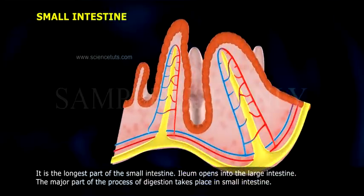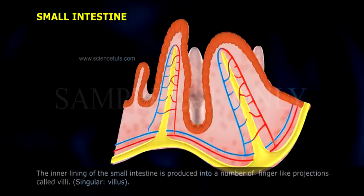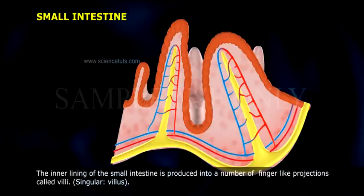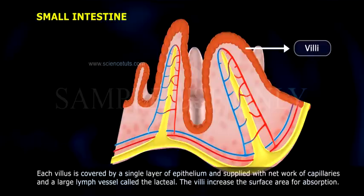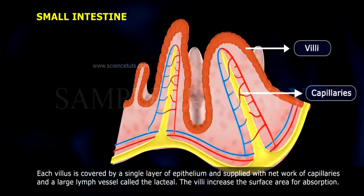The major part of the process of digestion takes place in the small intestine. The inner lining of the small intestine is produced into a number of finger-like projections called villi (singular: villus). Each villus is covered by a single layer of epithelium and supplied with a network of capillaries and a large lymph vessel called a lacteal. The villi increase the surface area for absorption.